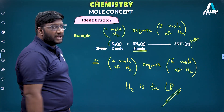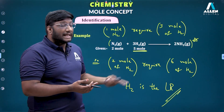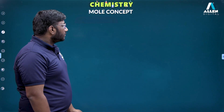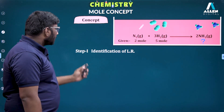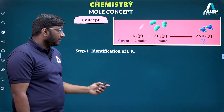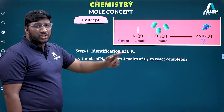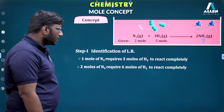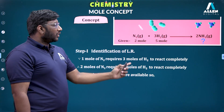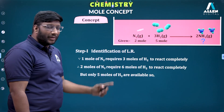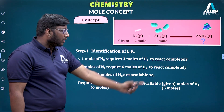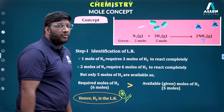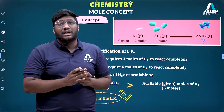Step 1 is identification of the limiting reagent. From the balanced equation: 1 mol of N2 requires 3 mol of H2 to react completely, so 2 mol of N2 requires 6 mol of H2. But only 5 mol of H2 is given. The required moles of H2 are greater than the available moles. So H2 is taken in lesser quantity and H2 is the limiting reagent. That is Step 1 — identify which one is the limiting reagent from the given conditions.